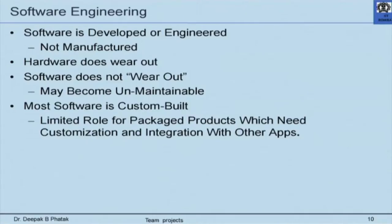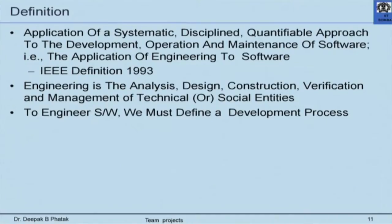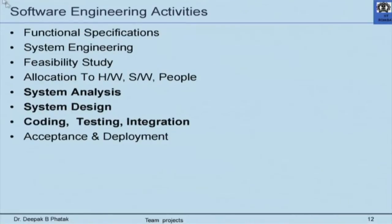We then talk to them about what software engineering is, how it has been defined originally by IEEE. We tell them about software engineering activities and emphasize three points: systems analysis, which should result in a software requirement specification; system design, which should result in program design, module design, and coding; and testing and integration. These are the three aspects which you must emphatically do while completing your project. All other things are basically for your information.